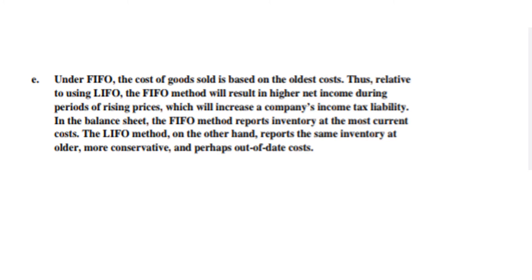On the balance sheet, the FIFO method reports inventory at the most current cost, meaning your inventory cost is higher when using FIFO and your cost of goods sold is lower. Under LIFO, your inventory cost is lower and the higher values appear in cost of goods sold. These are the two key differences between the methods in financial reporting.